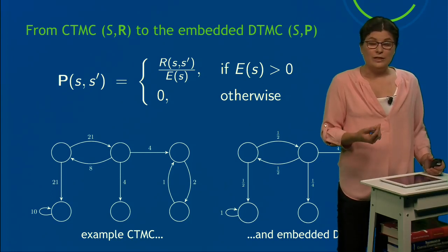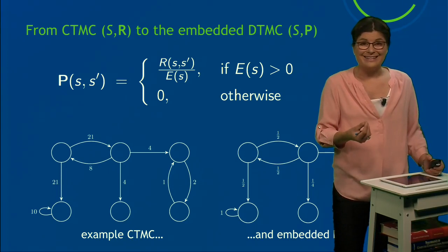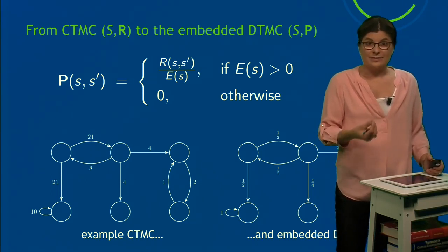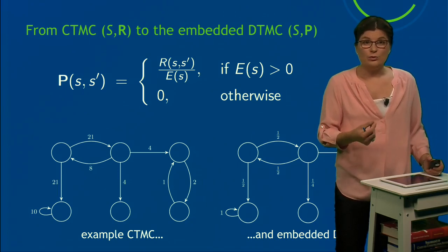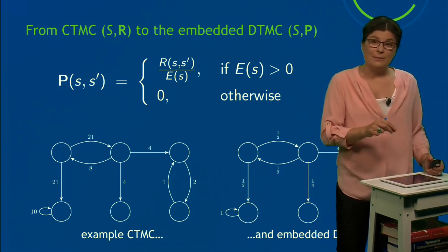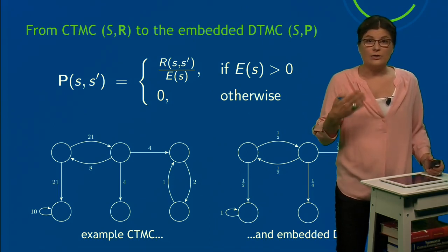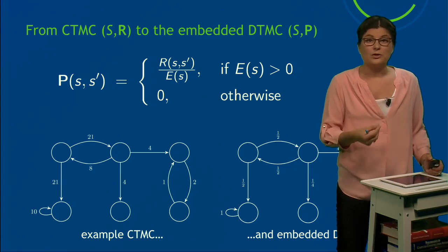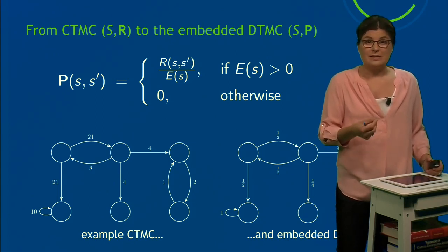So now you've seen how to move from a DTMC to a CTMC by adding a random variable that is exponentially distributed, and you've seen how to move from a CTMC to the embedded DTMC. And even though you might think this is a lot of background information, you will use this later when we need to compute the transient probability distribution of a CTMC.